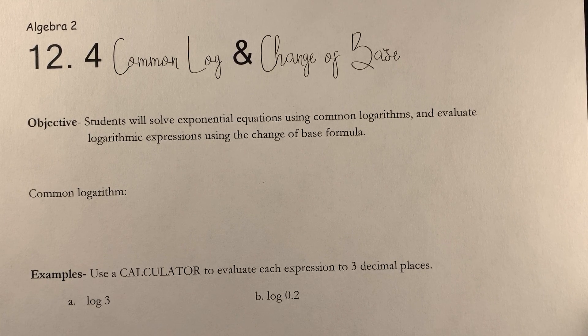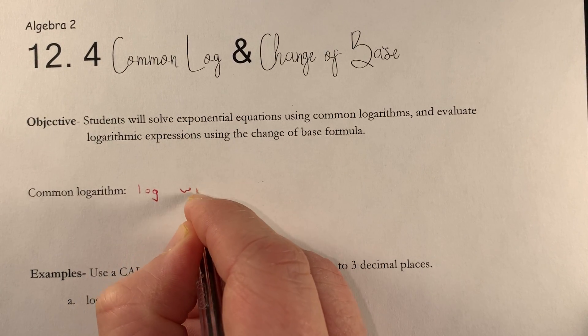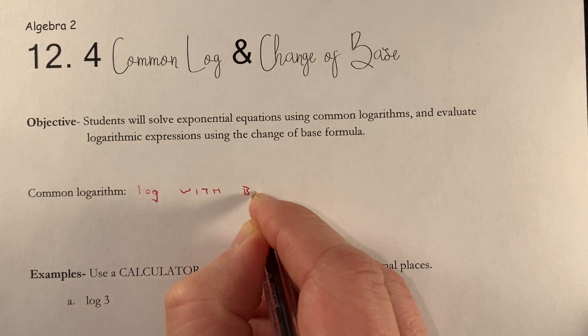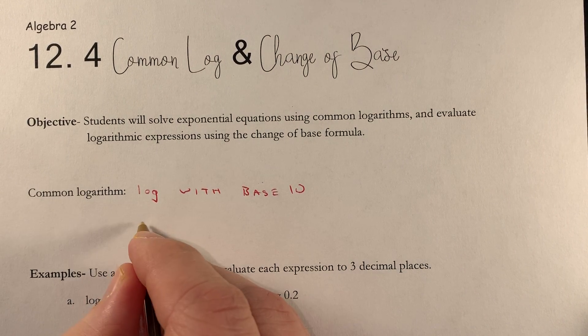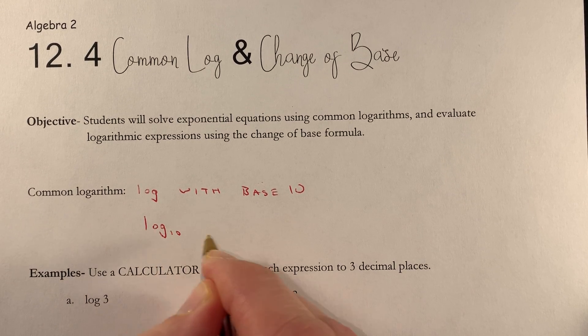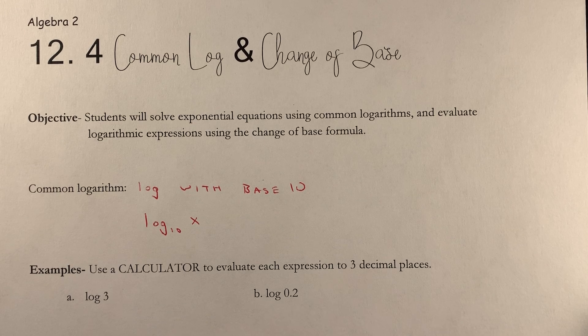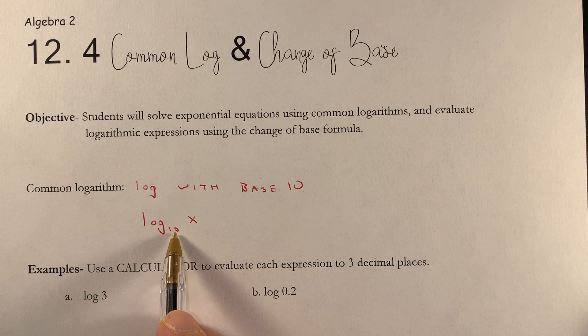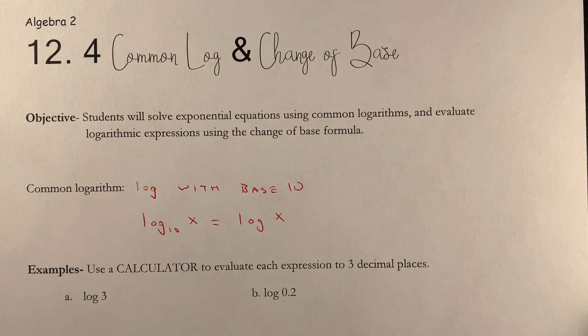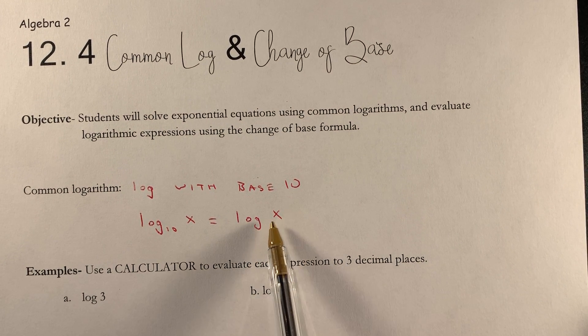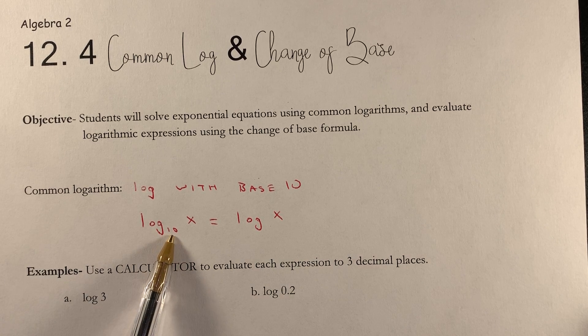We'll start with common logarithm. A common logarithm is a log with base 10. It looks like this: log base 10 of some number, so we'll just use x. Log base 10 of x, when there's a base 10, that's a common logarithm. It can be written like this: log x. So if you see a logarithm with no base, that's a common log, and that is a log base 10.